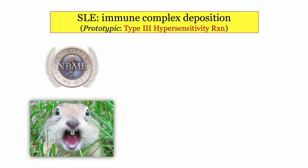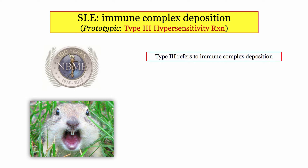We'll start with the basics. SLE is pretty exciting on the NBME because it is the prototypic type 3 hypersensitivity reaction — and they like prototypic. Type 3 refers to immune complex deposition. To avoid confusing type 2 and type 3, note that SLE has three letters to signify type 3. That alone should get you there.